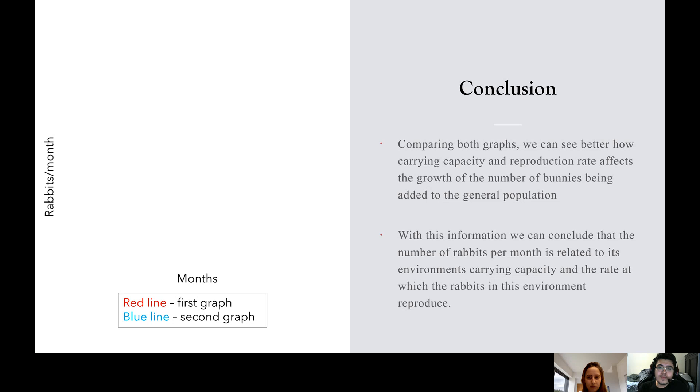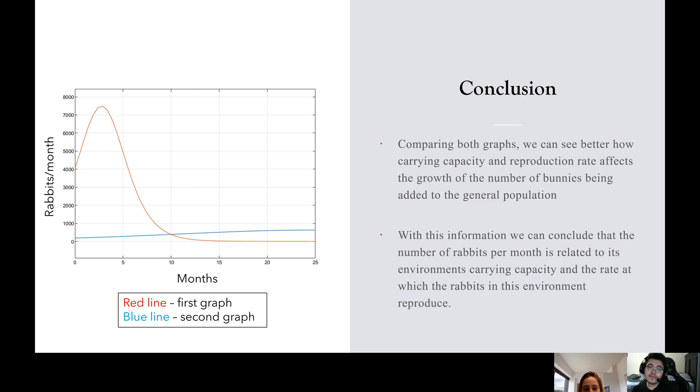For this third graph we are comparing both graphs that we did previously. Comparing these both graphs, we can see how carrying capacity and reproduction rate affects the growth of the number of bunnies being added to the general population. The first graph, the red line, shows a decrease in the population growth along the months, and the second graph, the blue line, shows that there is a slow increase in the population growth over time because of the different carrying capacity and reproduction rate. Therefore, we can conclude that the number of rabbits per month is related to the environment's carrying capacity and the rate at which the rabbits in this environment reproduce.